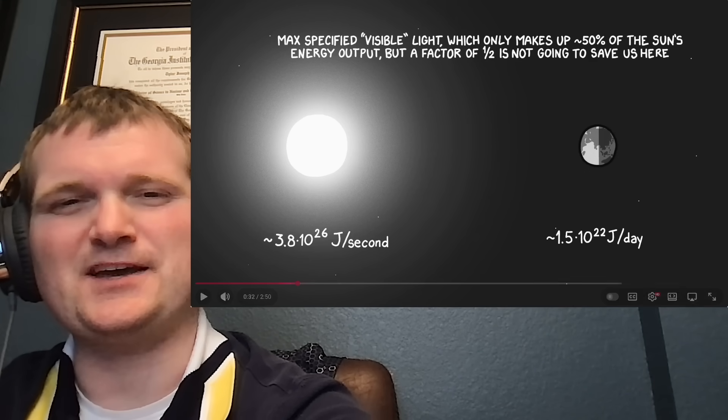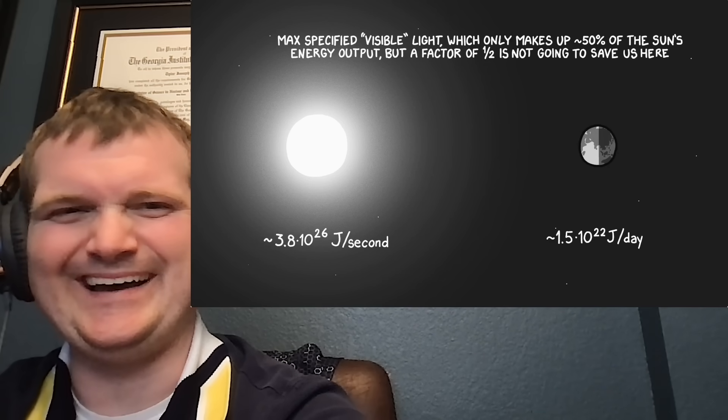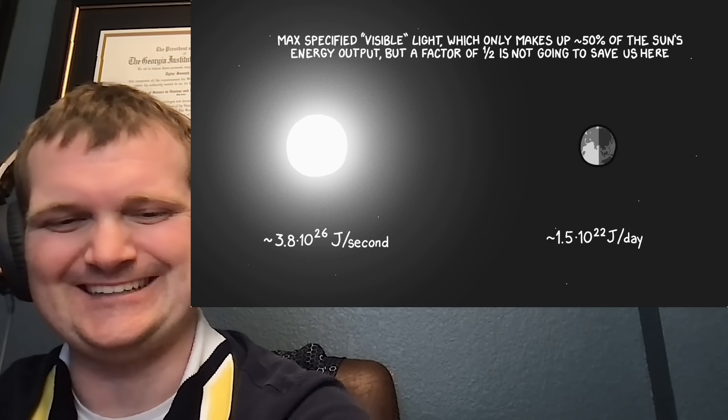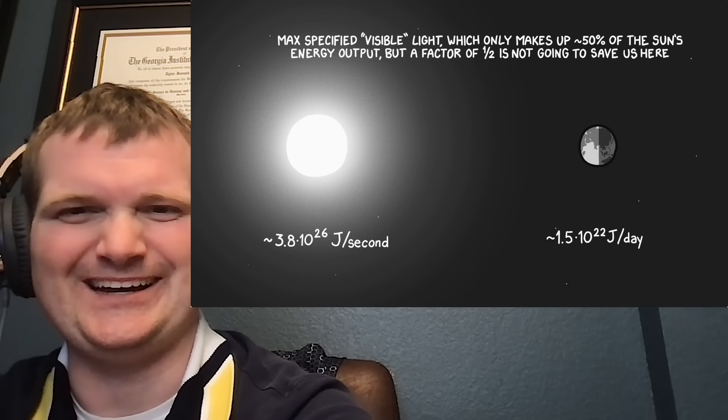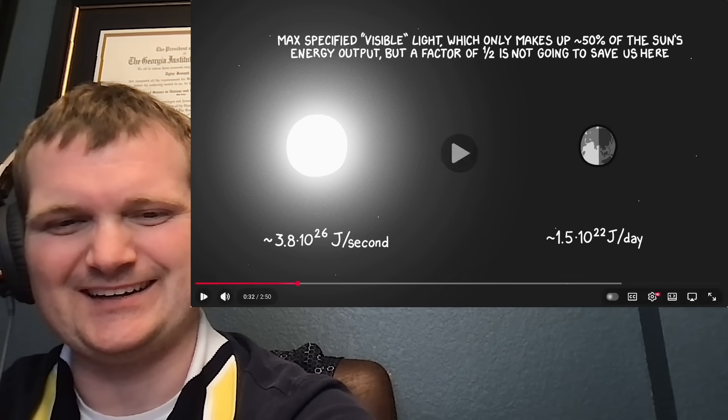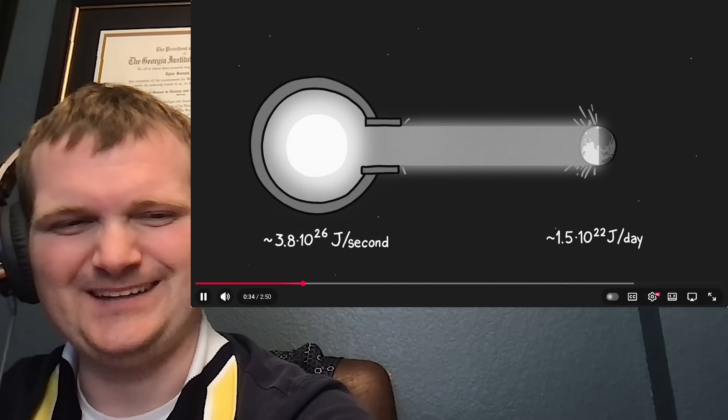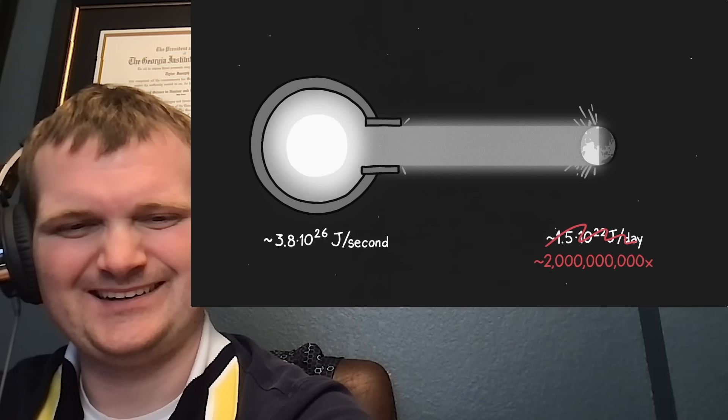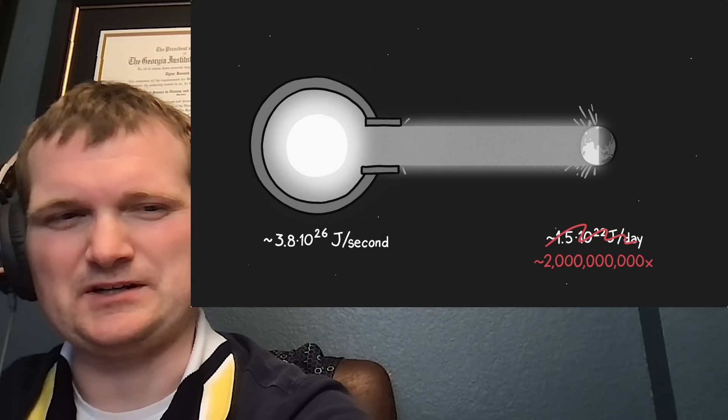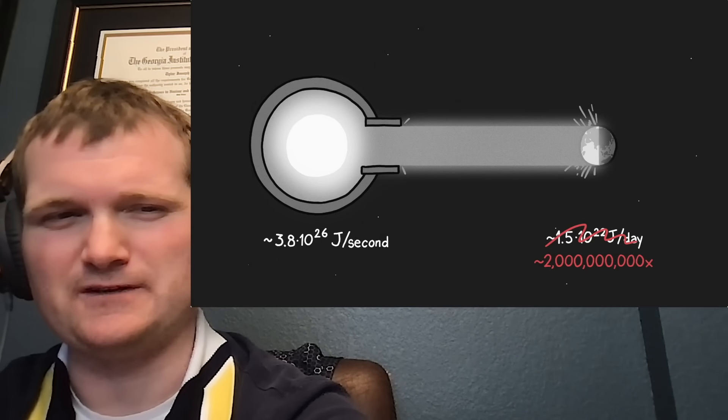The Earth receives about 0.004% as much energy from the sun in an entire day as the sun emits every second. Okay, specified visible light, that's going to cut it in half, but it's not going to matter. Rough order of magnitude, cutting it in half does nothing. If Max's beam were only focused down narrowly enough to cover the entire Earth, it would still deliver almost 2 billion times the normal amount of solar power to each point on the Earth's surface. So at that point, solar panels would work for a fraction of a second until they fall apart.